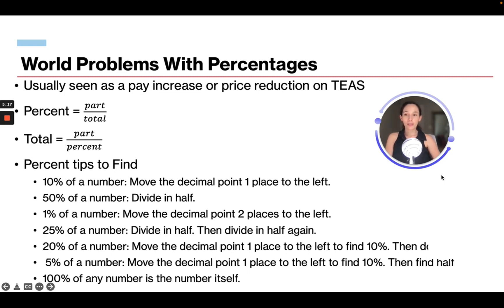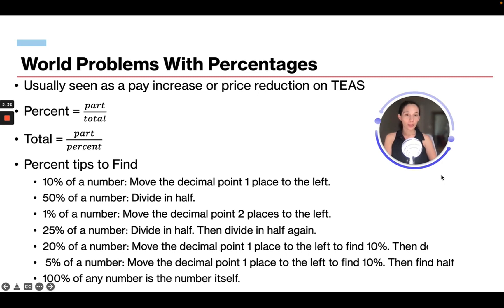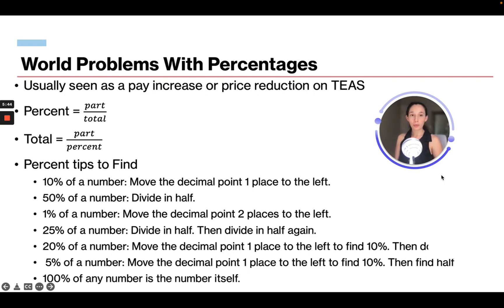Tips to find percent: for 10% of a number, move the decimal point one place to the left — so 10% of 50 is 5. For 50% of a number, divide it in half — so 50% of 50 is 25. For 1% of a number, move the decimal point two places to the left — so 1% of 50 is 0.5.